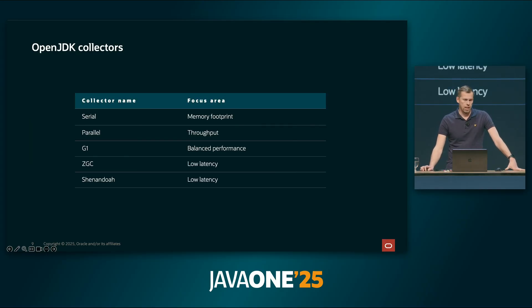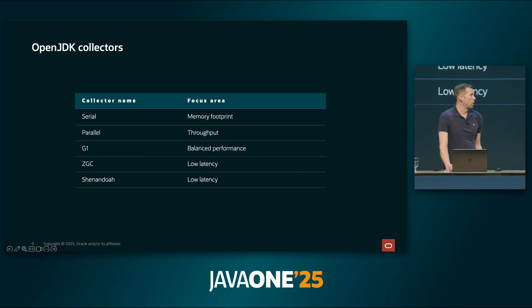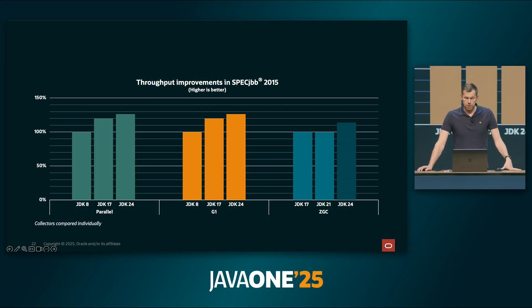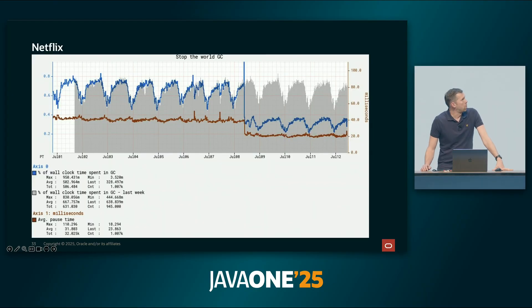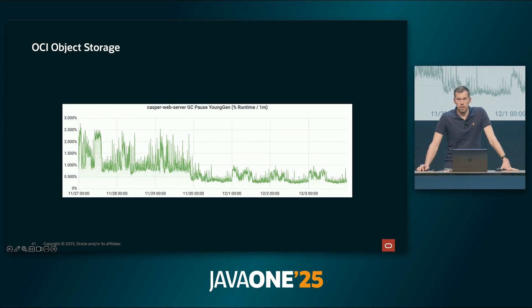In OpenJDK today we have five different garbage collectors: Serial, which has a main focus on low memory overhead; Parallel, which is a throughput collector aiming to provide as good throughput as possible; G1, or the Garbage-First collector, which has a balanced performance profile; and then ZGC and Shenandoah, which both aim at providing good low-latency alternatives for Java. Stefan then dives deeper into performance improvements of these GCs across Java versions, and recounts the positive outcomes Netflix, MercadoLibre, LinkedIn, and OCI had when upgrading their runtimes. Another great talk on this space that I recommend is from Eric Osterlund on ZGC.